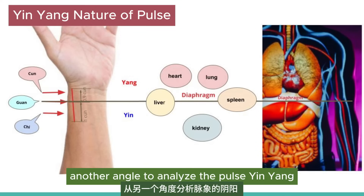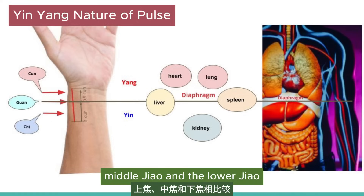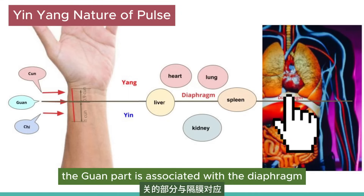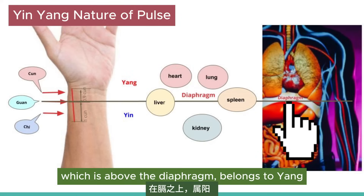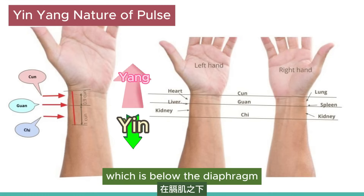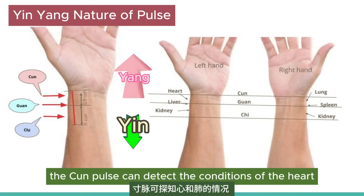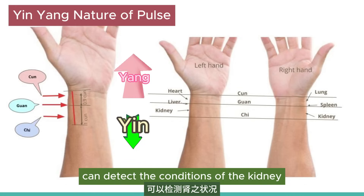Another angle to analyze the pulse yin-yang is to compare the cun-guan-chi with the upper jiao, middle jiao, and lower jiao. As shown in this chart, the guan part is associated with the diaphragm. The upper jiao, which is above the diaphragm, belongs to yang, and the lower jiao, which is below the diaphragm, belongs to yin. Thus, the cun pulse can detect the conditions of the heart and the lungs, and the chi pulse can detect the conditions of the kidney.